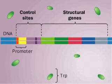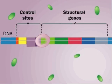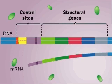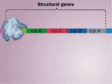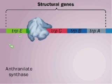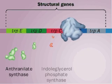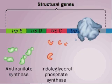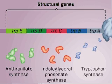When the bacterial cell's tryptophan levels are low, RNA polymerase can bind the promoter and transcribe the structural genes. Each gene encodes a protein chain for an enzyme in the trp synthesis pathway: TrpE and D for anthranylate synthase, TrpC for indoglycerol phosphate synthase, and TrpB and A for tryptophan synthase.